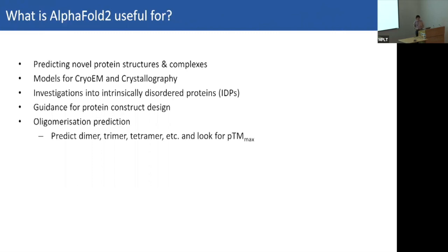There are also reports of using AlphaFold to predict oligomerisation states. You set up jobs predicting your sequence as monomer, dimer, trimer, tetramer, and so on, and look for the highest PTM score — this has been shown in the literature to indicate which oligomeric state is the true one, though there are exceptions. These are the basic uses where you just submit jobs as demonstrated.